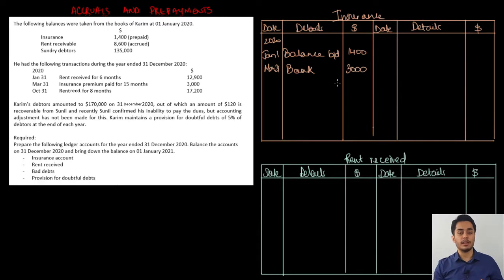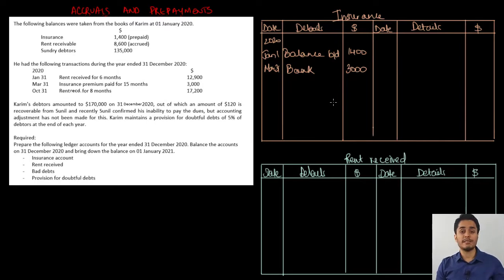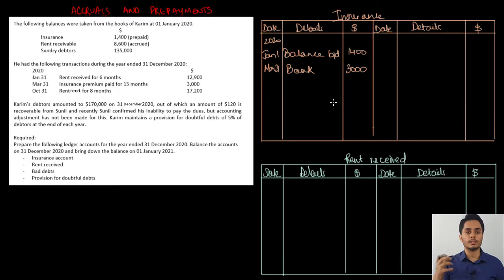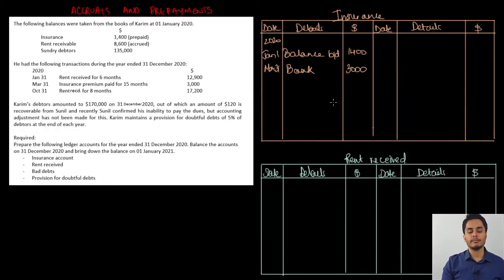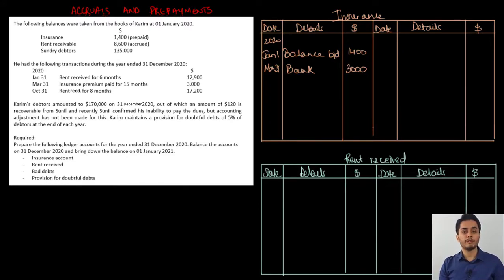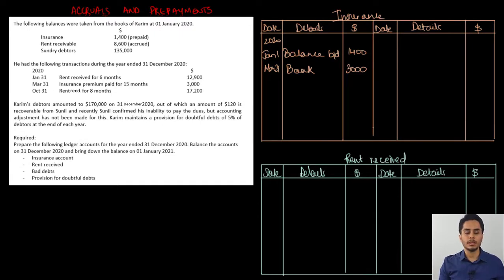If the question doesn't specify the mode of payment, you could write either cash or bank — that's fine. No other information is available for insurance, but using what we have, we need to find two things: the closing balance on 31st December, and how much is transferred to the income statement. If you get one of these, the other is the balancing figure. Using the information that insurance premium was paid for 15 months at $3,000, we can find the closing balance. If I find the prepaid insurance on 31st December — how much has been paid in advance for next year — that becomes the closing balance.